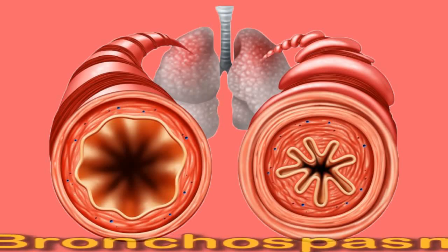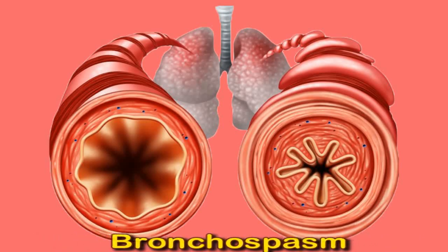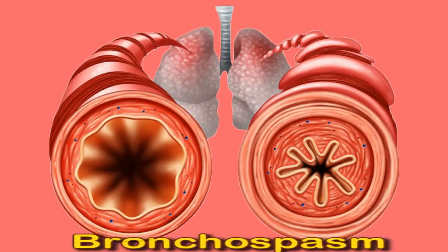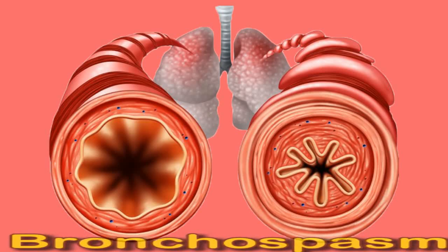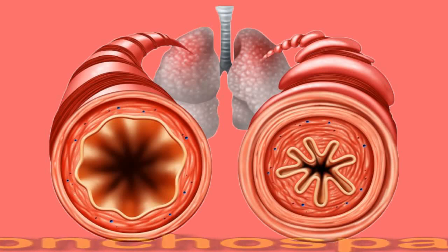Bronchospasm occurs when the muscles of the lung airways constrict and tighten, narrowing the diameter of the airways. It can lead to pain or tightness in the chest, difficulty breathing, and sudden fatigue. Bronchospasm can arise as a result of underlying respiratory conditions such as asthma, chronic obstructive pulmonary disorder (COPD), and chronic bronchitis. However, people without any underlying respiratory conditions may experience exercise-induced bronchospasm (EIB).